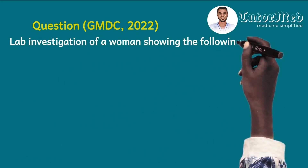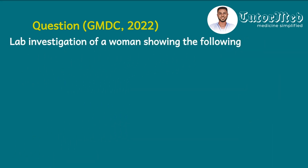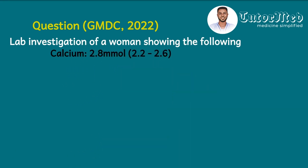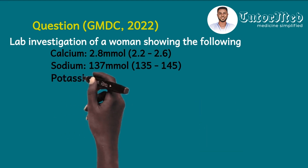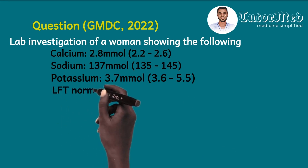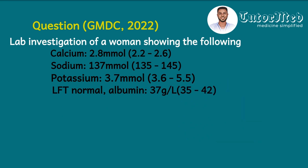We will now use a question from the GMDC exam 2022 to illustrate the approach. A lab investigation of a woman showed: calcium 2.8 mmol/L (reference range 2.2–2.6 — clearly elevated), sodium 137 mmol/L (normal), potassium 3.7 mmol/L (normal), LFTs normal, and albumin 37 g/L.